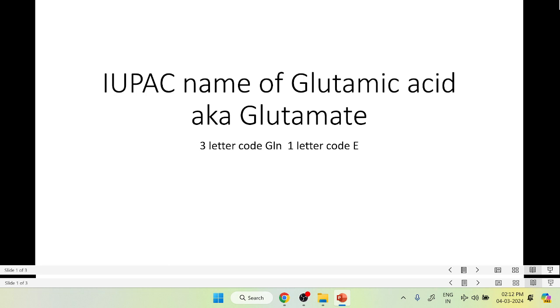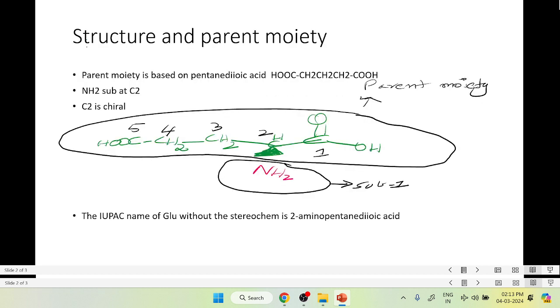Now let's look at the structure to identify the parent moiety. The parent moiety is pentanedioic acid, also called glutaric acid. The structure is COOH-CH2-CH2-CH2-COOH, highlighted in green. We number as per IUPAC, beginning with the carboxyl group on the right: one, two, three, four, five.